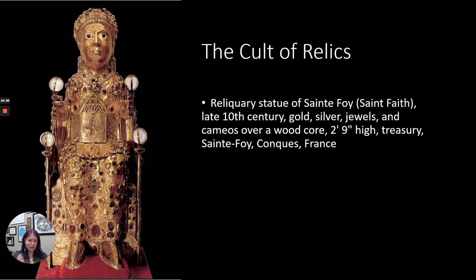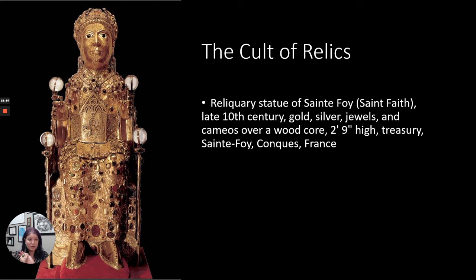So, to recap the intro to Romanesque: it's named after the artistic style, not politics or geography. Key architectural features include round arches, barrel vaults, and groin vaults — all of which make it Roman-like, which is where we get the name Romanesque. What influences things at this time? The development of independent cities, a population thanking God for not ending the world in the year 1000, and the rise of pilgrimage as an important aspect of religious society. Next we will get into the architecture.